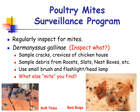For the prevention and control of poultry mites, we have a program known as the poultry mites surveillance program. This program requires that poultry producers regularly inspect their flock for the presence of mites. For Dermanyssus gallinae, producers or caretakers need to inspect sample cracks and crevices of the chicken house, sample debris from roost slats and nest boxes, and use a small brush and flashlight or headlamp during inspection, particularly during the night. During inspection, you might also find soft ticks as well as bed bugs.